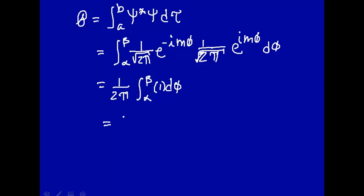And that's just equal to beta minus alpha over 2π. So that's the probability of finding the particle between angle alpha and beta.